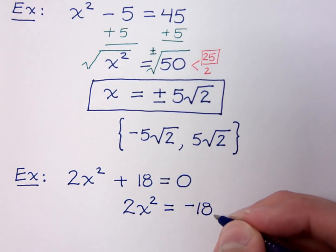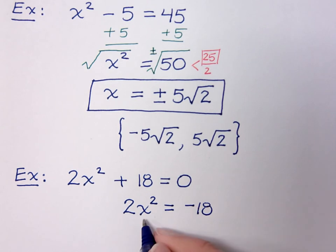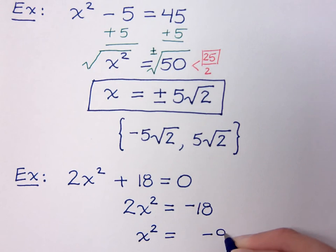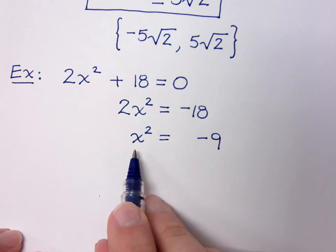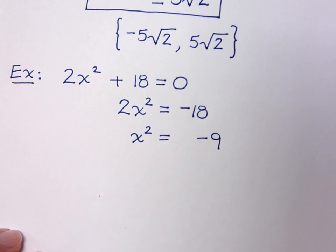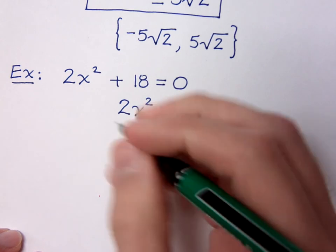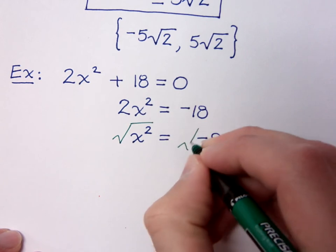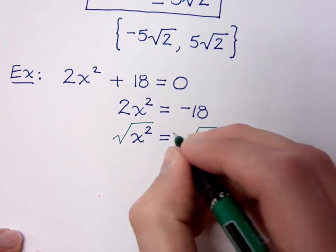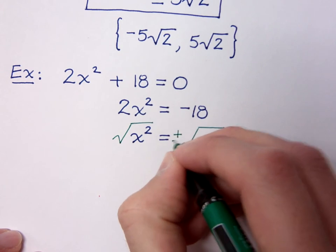But don't take the square root of both sides yet. You still have to get the x squared by itself. So divide both sides by 2 and you have x squared is equal to negative 9. Now that we have the x squared totally by itself, this is where you apply the square root property. So you take the square root of both the left and the right side. Remember, of course, your plus or minus.